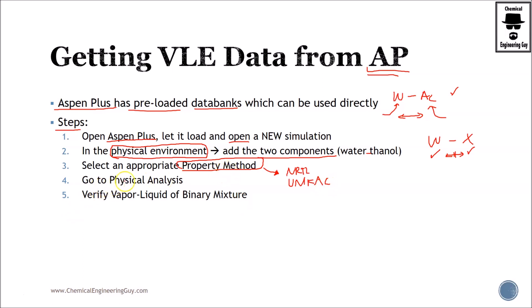Then, once you have selected, go to the tab of physical analysis and verify the binary mixture compositions. You can go to vapor liquid binary analysis and you can select a lot of data. The most important one will be, of course, the T-X-Y diagram, X-Y diagrams, but you can get plenty of data.